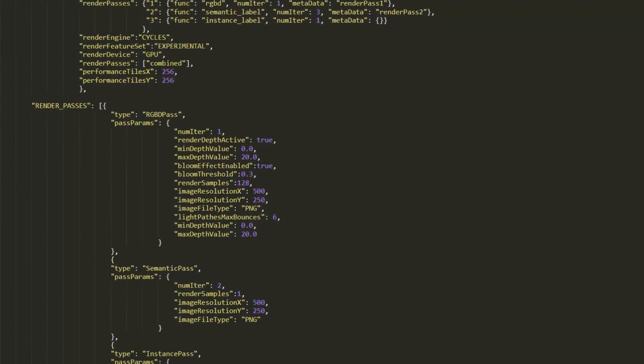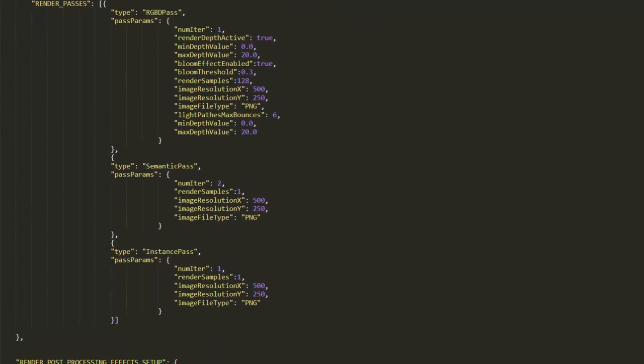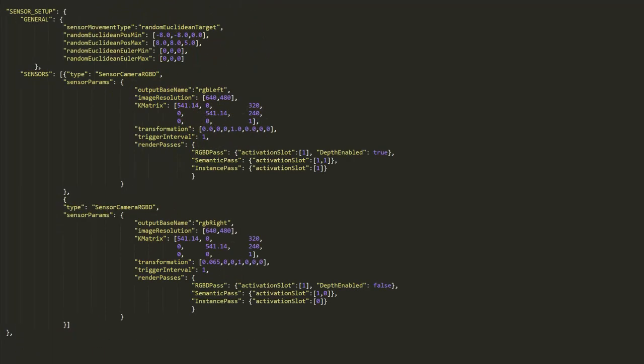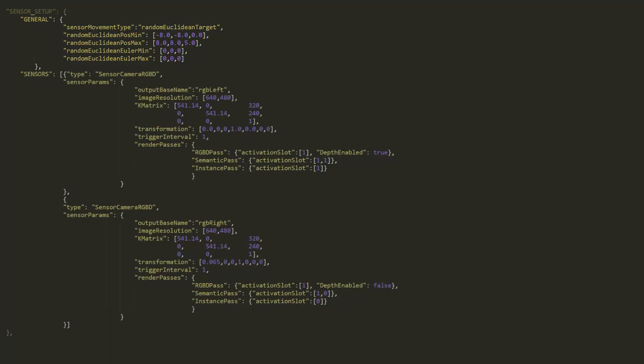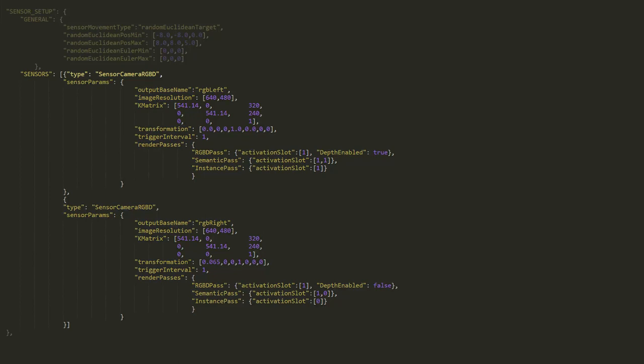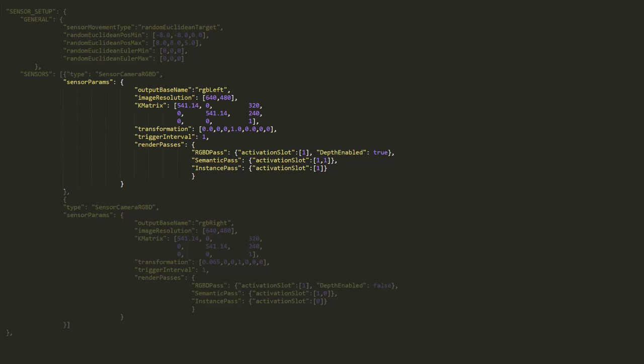The behavior of the simulator can easily be adjusted with a config file. In the config file, each main component has its own section. Each component has a general section for general parameters and a module section which lists all modules of the component which will be loaded. For the sensor setup, that could be all sensors which are used in the scene. For the environment setup, that might be all of the lights you want to use. Each module has then again two sections. The first one defines the type of the module and the second one the specific parameters of that module.